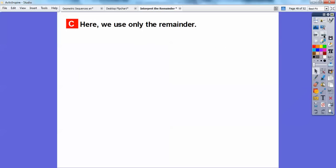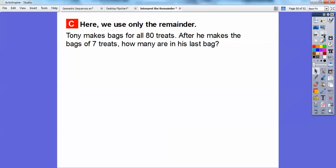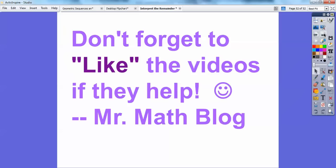What if we use only the remainder right here? So it might ask you something like this. Back to Tony. So Tony makes bags for all 80 treats. After he makes bags of the seven treats, remember he made 11 bags of the seven treats. It might ask you how many are in his last bag. Well, how many were in that last bag? That was the leftover stuff. So Tony's last bag will have three treats in it because that's what was left over in that last bag. So just watch what they're asking for. And it depends on if you're going to use the remainder or not use the remainder or add one to the quotient.